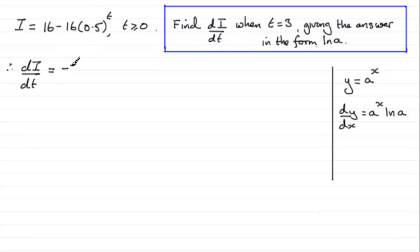we're going to have our minus 16 multiplied then by the differential of 0.5 to the power t, which is going to be 0.5 to the power t multiplied by the natural log of 0.5. So that's essentially di by dt.